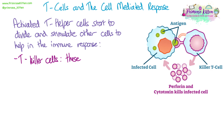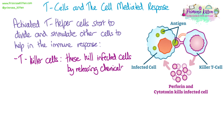Activated T helper cells are going to stimulate or activate T killer cells. These can go to where infected cells are and destroy those infected cells using chemicals that they can secrete, such as perforin and cytotoxins. Sometimes you'll see these cells referred to as cytotoxic T cells, because they release these chemicals to destroy infected cells. Perforin, for example, damages the cell membrane, punching holes in it so the internal workings leak out and the cell is destroyed.